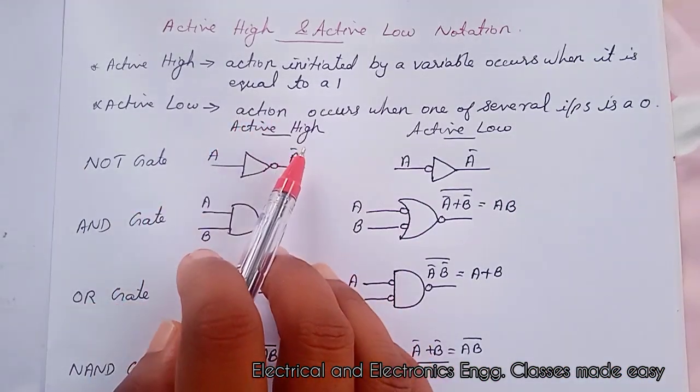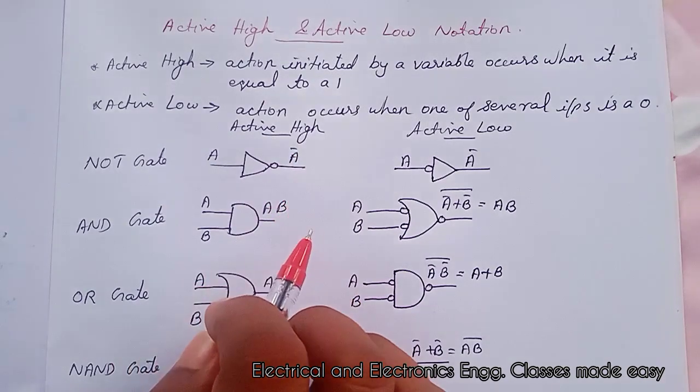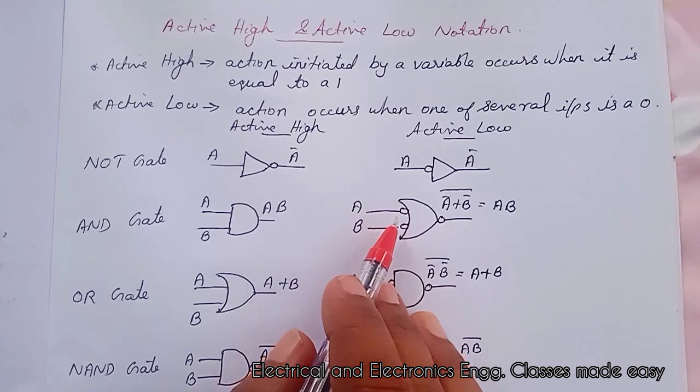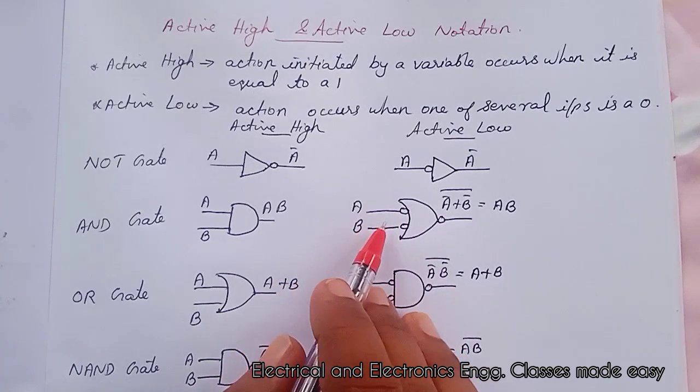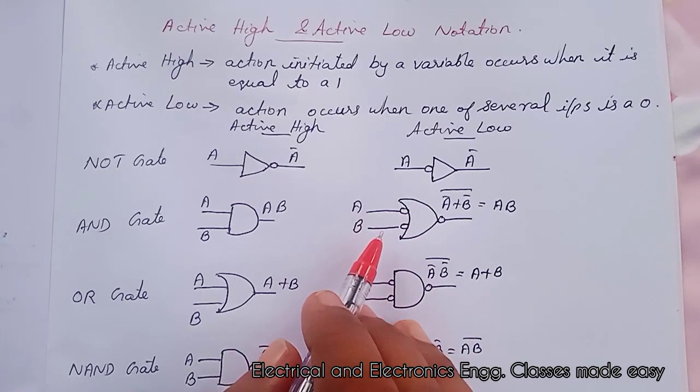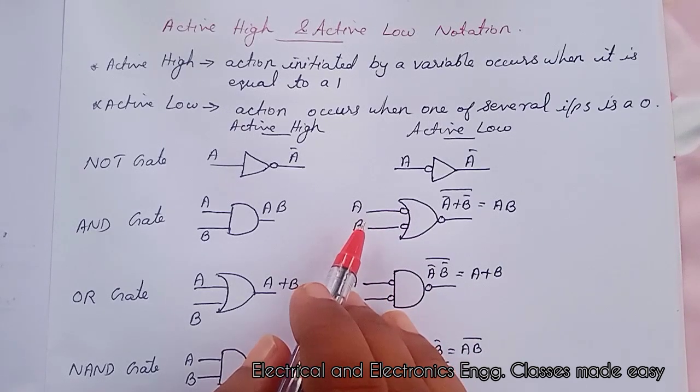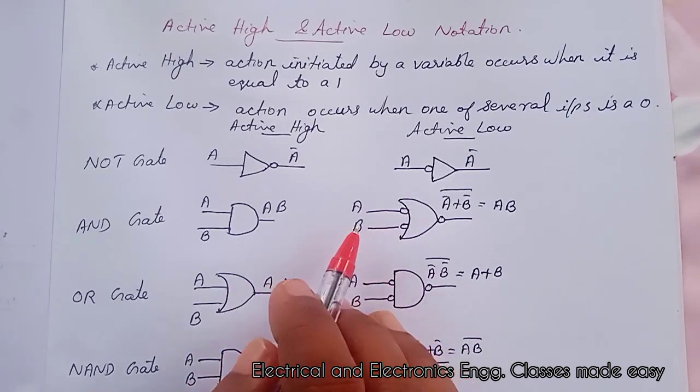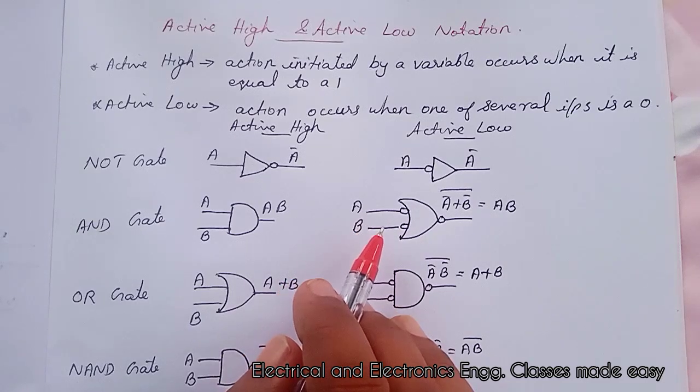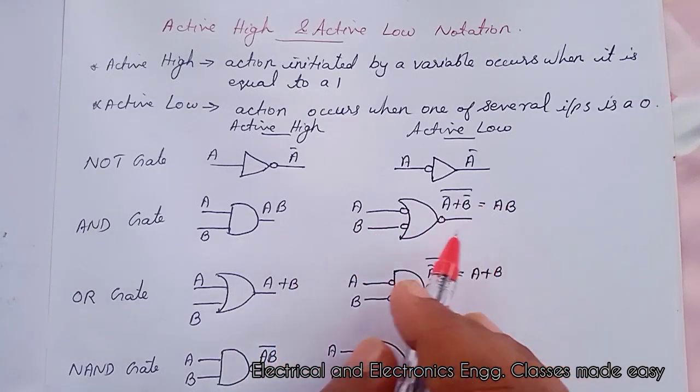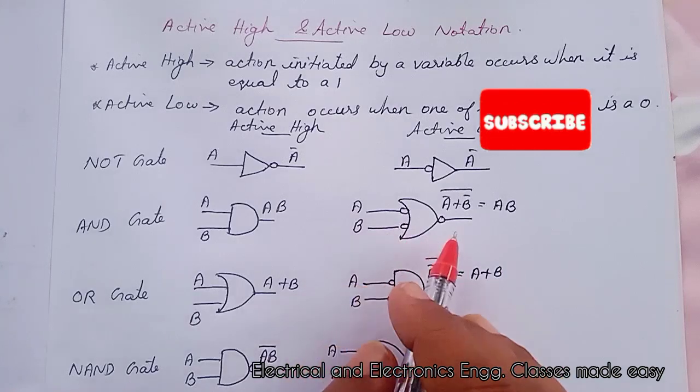On logic diagrams, placing the inversion bubble at the point where the input signal is connected shows an active low input. We may regard the bubble itself as an inverter. Thus, we can think of a 0 occurring on the external signal line as being inverted and producing a 1 internal to the device and vice versa.